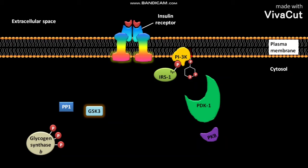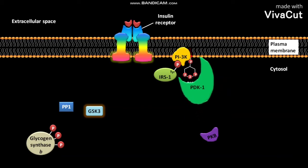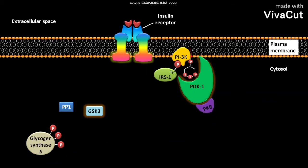PI3K converts the PIP2 in the plasma membrane to PIP3. A protein kinase called PDK1 then binds to the PIP3 and gets activated.